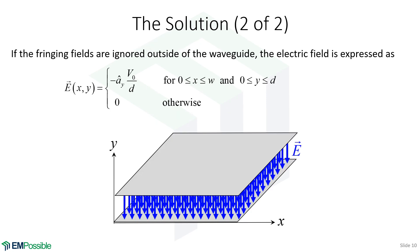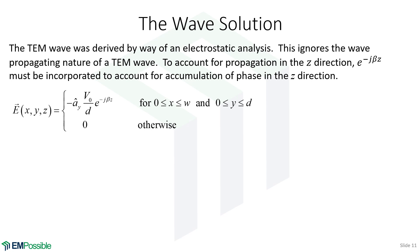This came from an electrostatic analysis, so right now this is a completely static electric field. To incorporate the wave nature, we simply take our electrostatic solution and multiply by e to the minus j beta Z. What we found from the electrostatic analysis was just the amplitude term. So now we have our wave solution for the electric field.